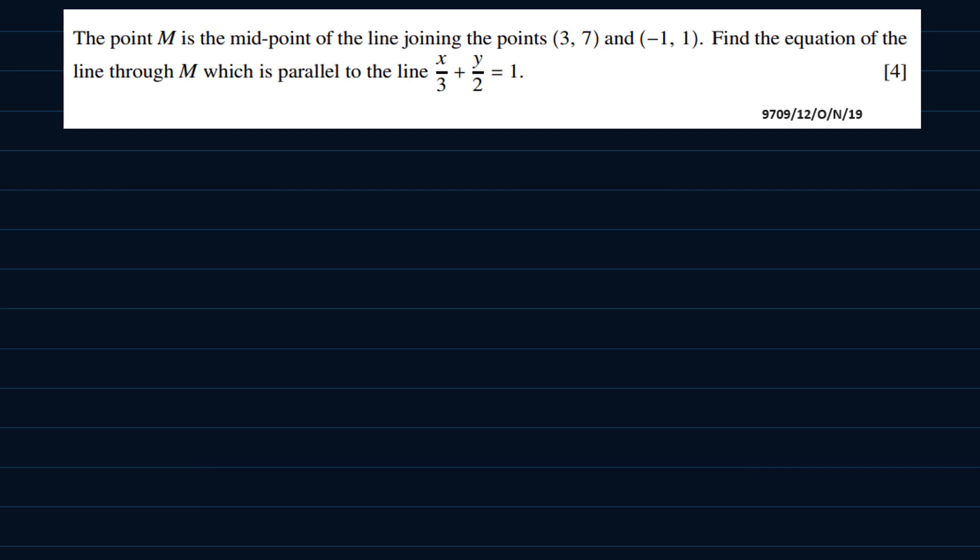So the question goes: the point M is the midpoint of the line joining the points (3, 7) and (-1, 1). Find the equation of the line through M which is parallel to the line x/3 + y/2 = 1.